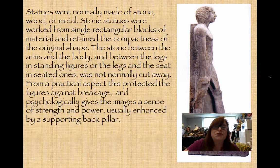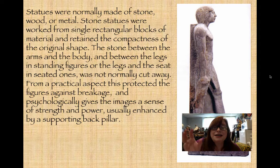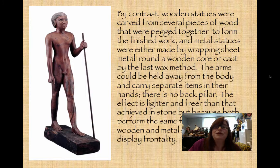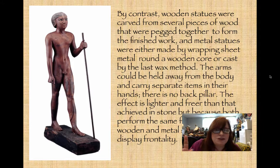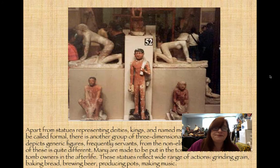Stone statues were worked from rectangular blocks of material — giving the image a sense of strength and power, and the king looks as if he's still merged with the stone. Wooden statues were carved from several pieces of wood pegged together. In the Middle Kingdom you see more wooden statues — they have no back pillar, everything is much freer and lighter, but everything is still frontal.